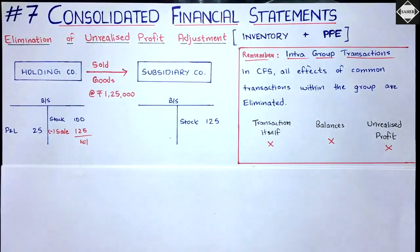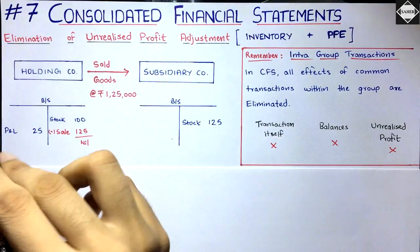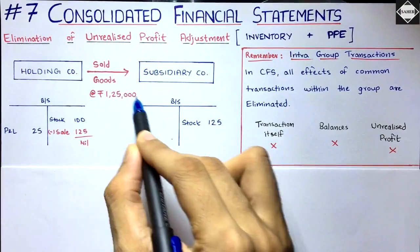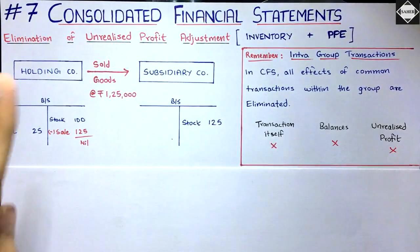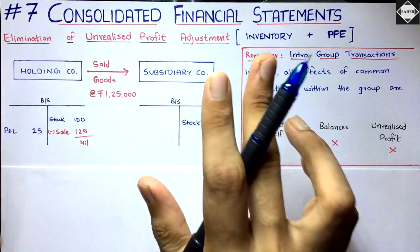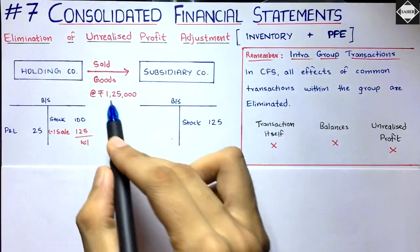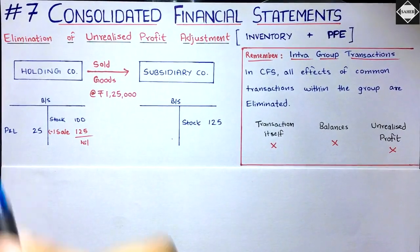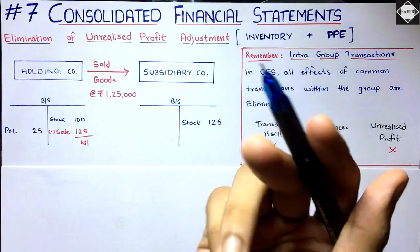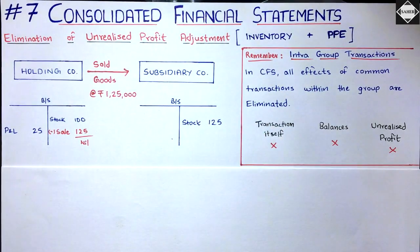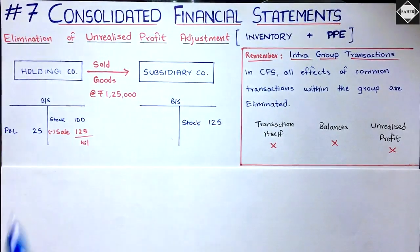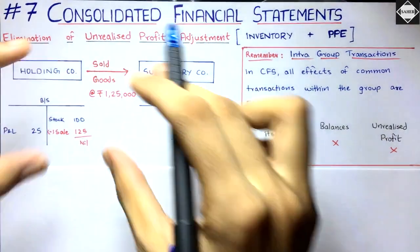Let's take an example to understand unrealized profit in inventory. The holding company sold goods costing one lakh to the subsidiary company at one lakh twenty-five thousand. The sales price is one lakh twenty-five thousand, so clearly there is a twenty-five thousand profit involved. Of course, it is the holding company — the seller — who has earned this profit. This is an intra-group transaction happening within the group.